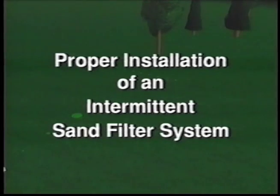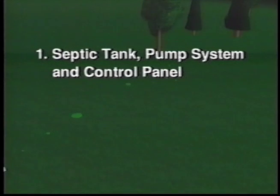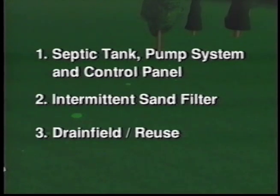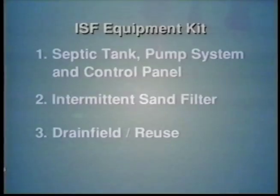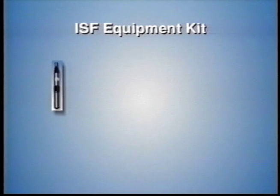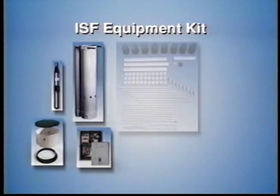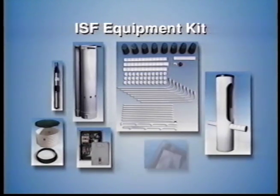The installation of the OSI intermittent sand filter system can be broken down into three distinct parts: the septic tank with the pump system and control panel, the intermittent sand filter itself, and the drain field or reuse component. To make the installation easier and help ensure the homeowner gets a long-lasting, trouble-free system, OSI offers a complete ISF equipment kit. In most cases, the kit includes all of the required components except the locally acquired materials such as the septic tank, external piping, plywood framing, filter media, and electrical wiring.